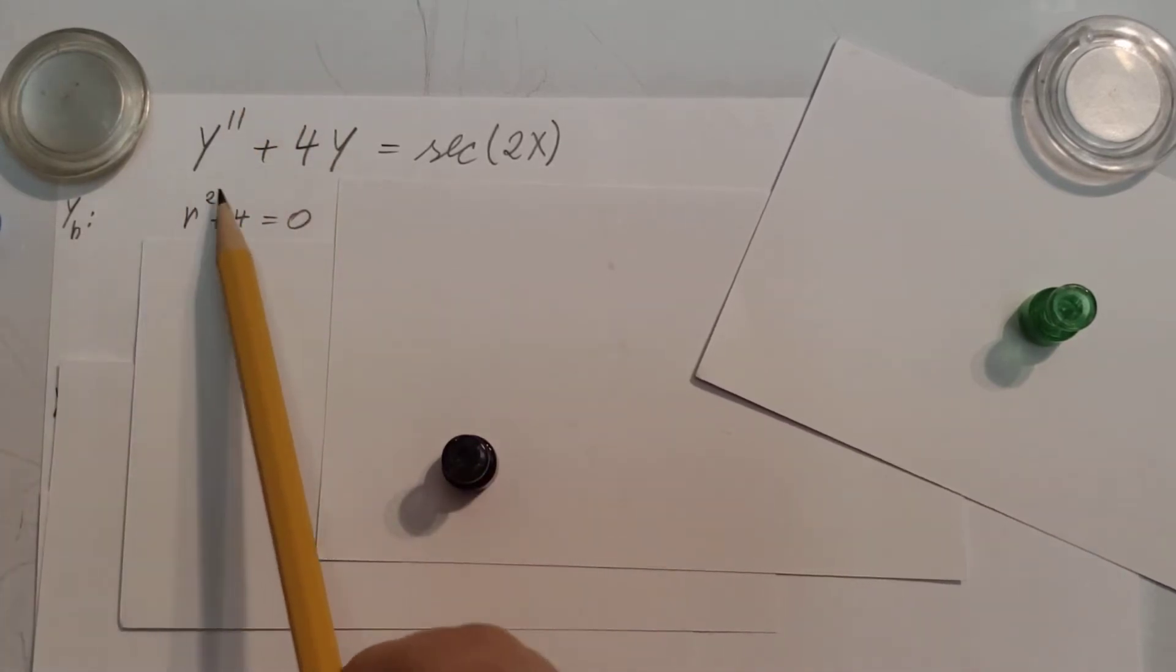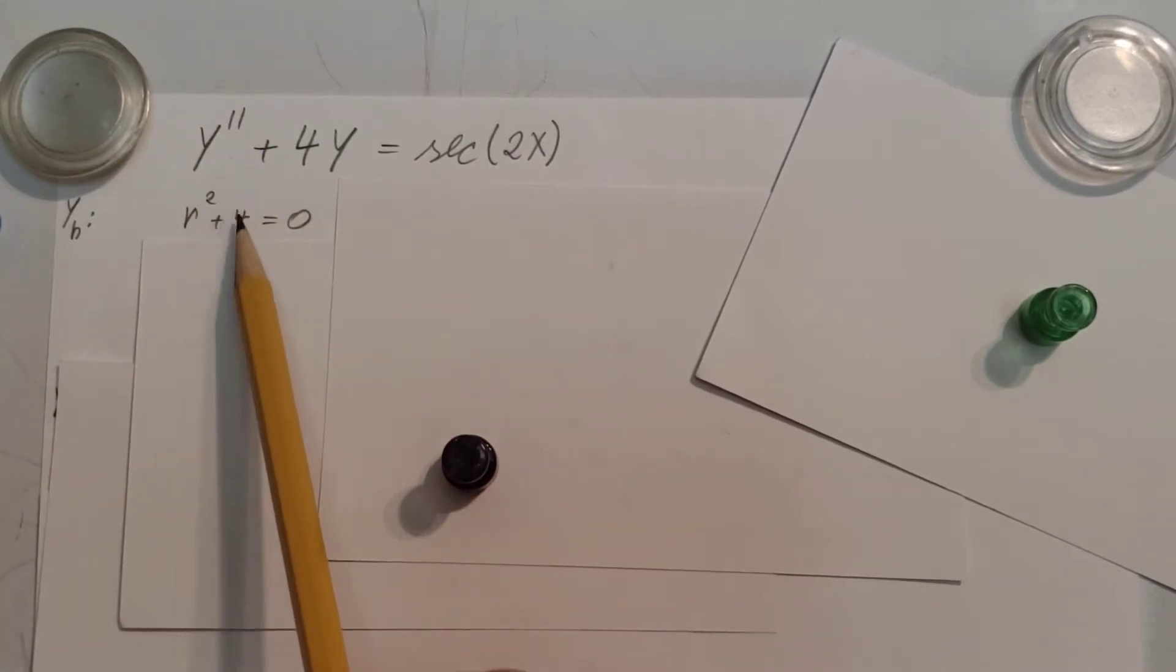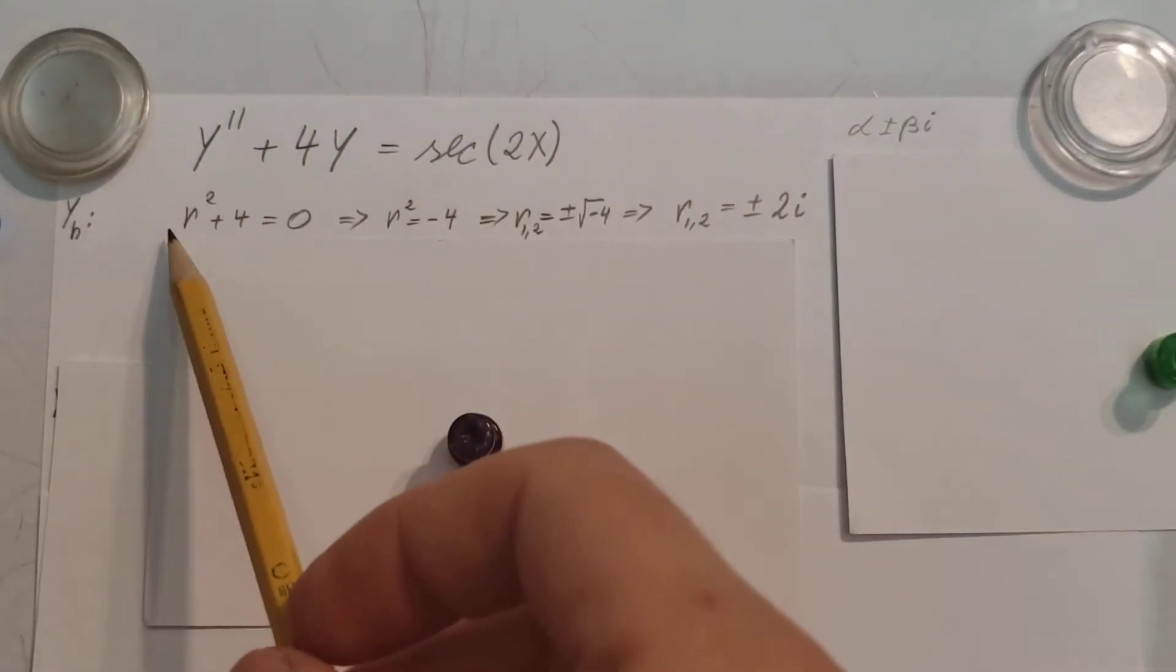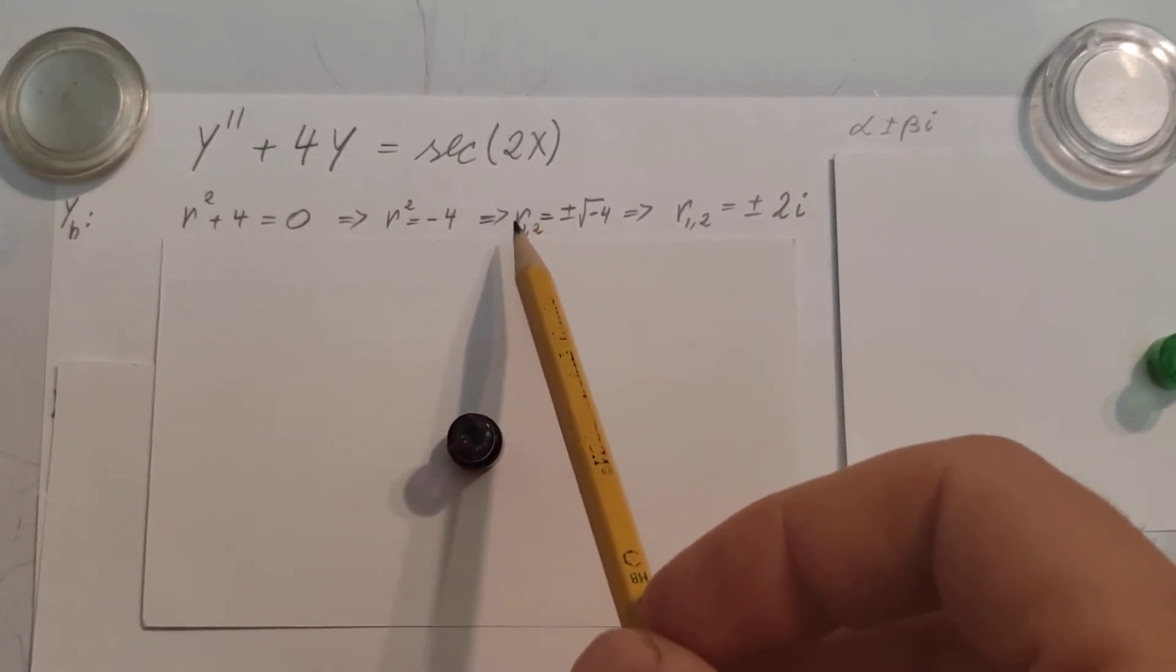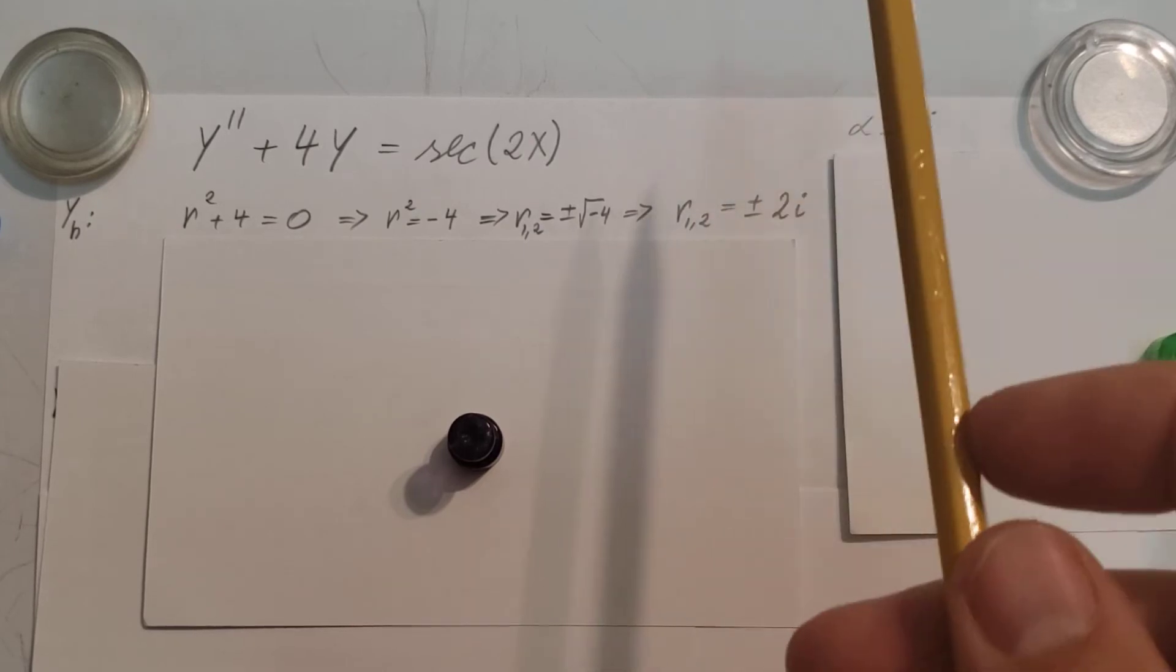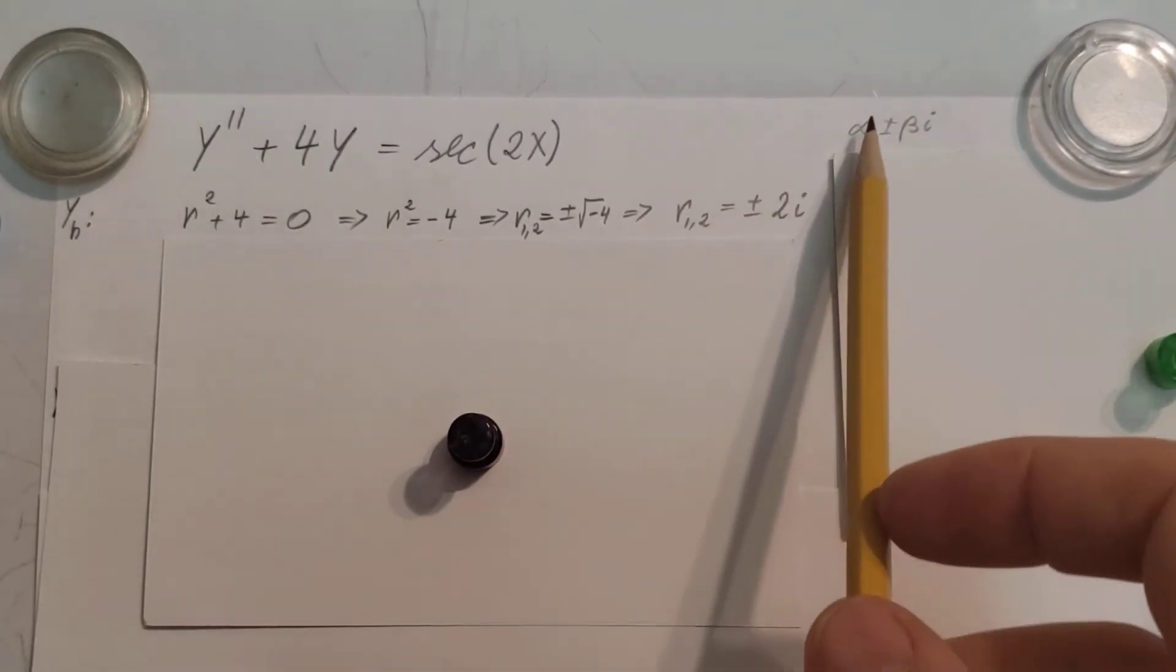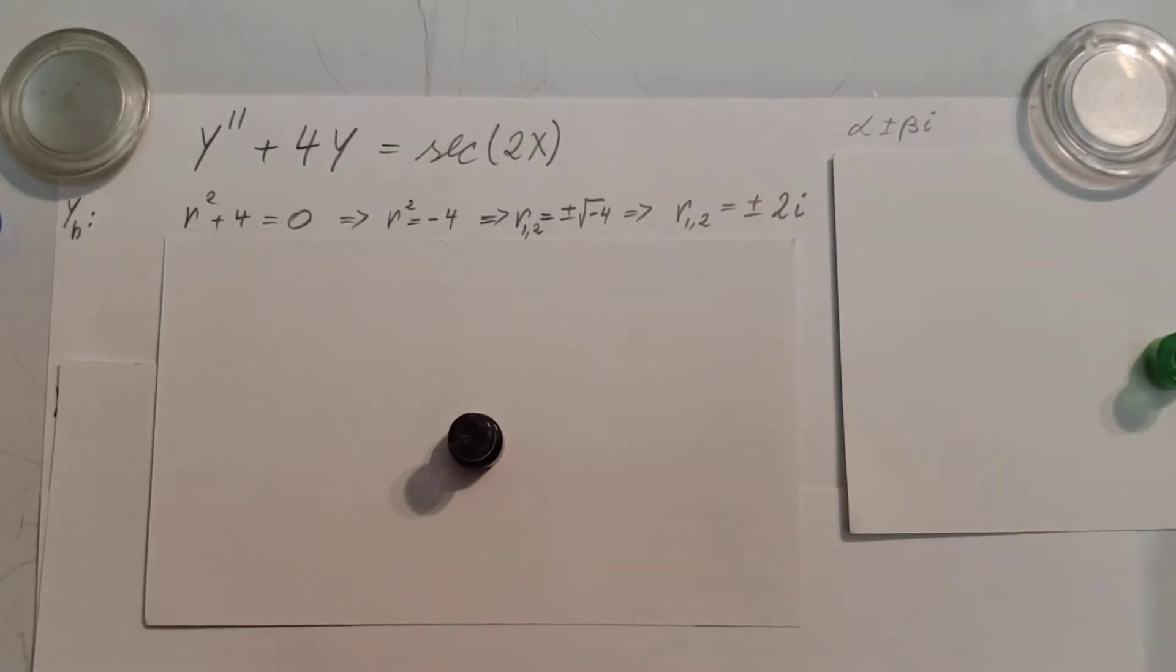So r² for this plus 4, just 4 for this term, equals 0. Now the roots of this equation: r² = -4. From this, my r1 and r2 will be ±√(-4), which will give me ±2i, which is a complex number. Our real part is 0, ±βi, and our β is 2.